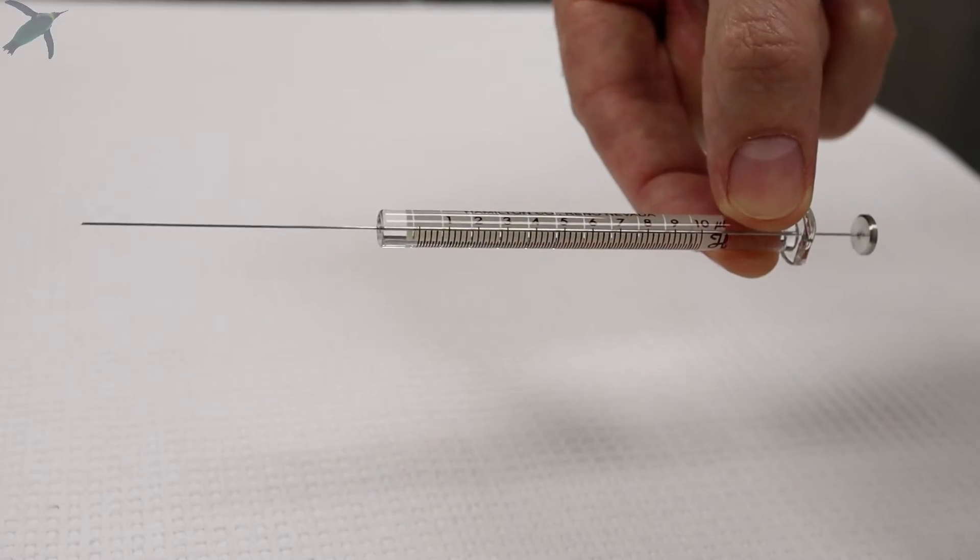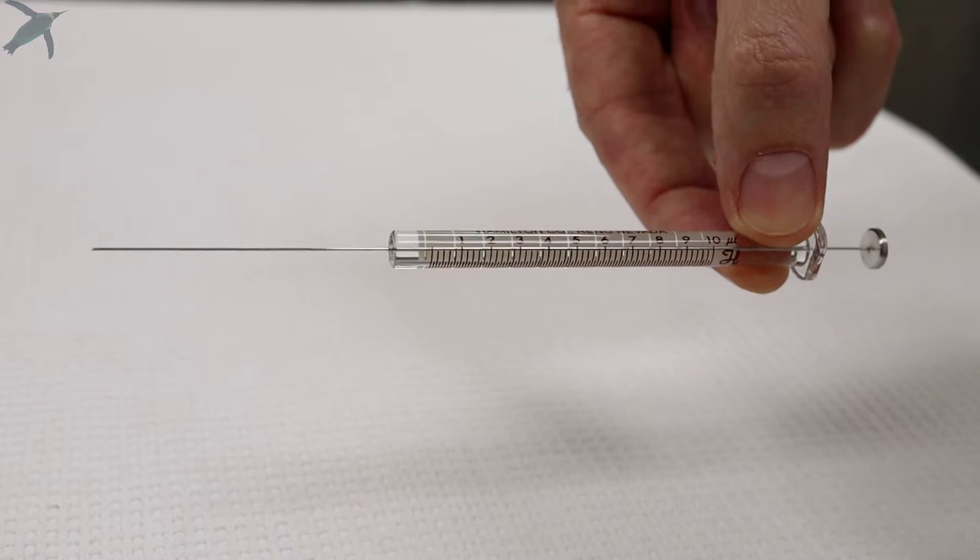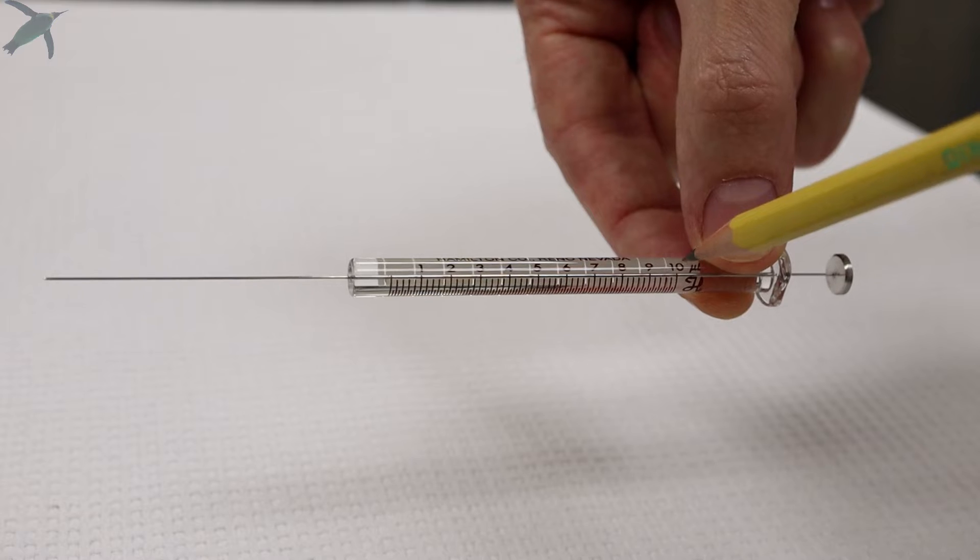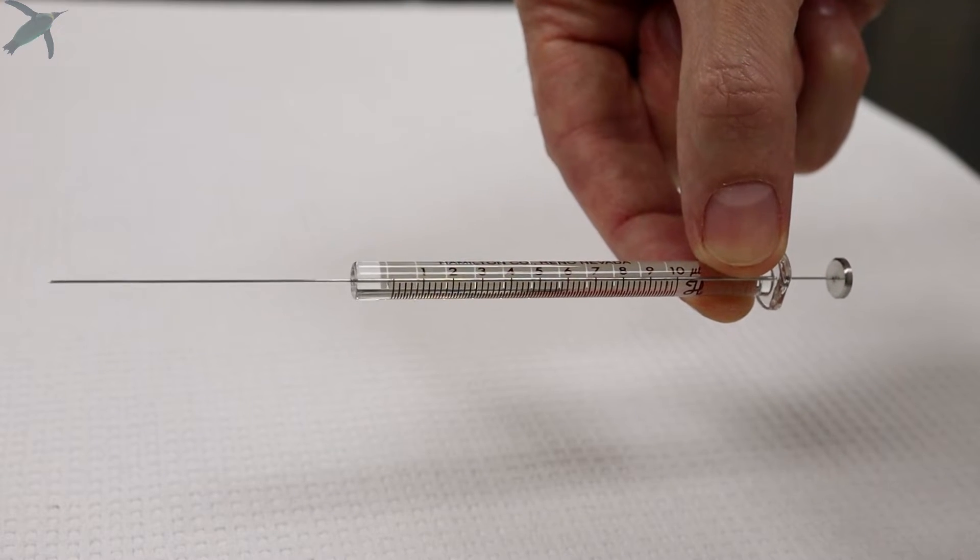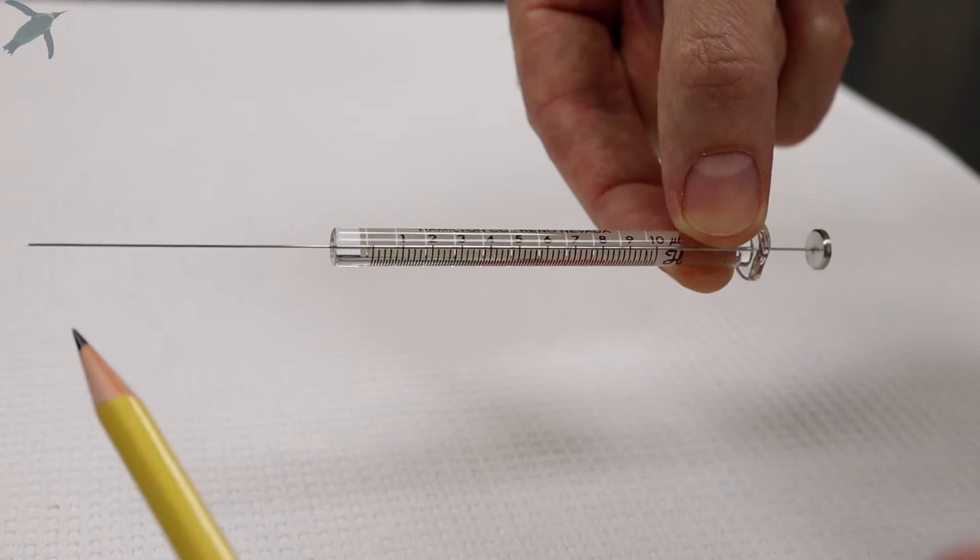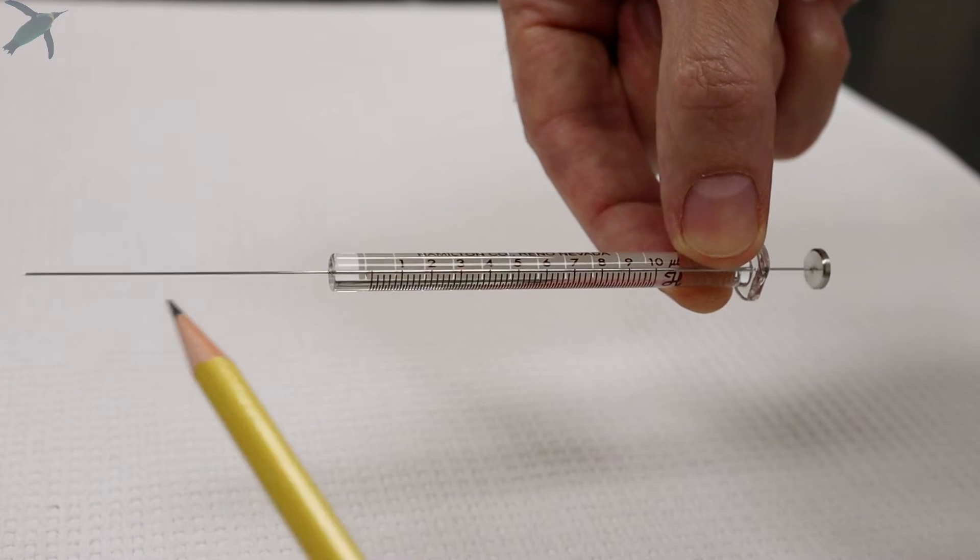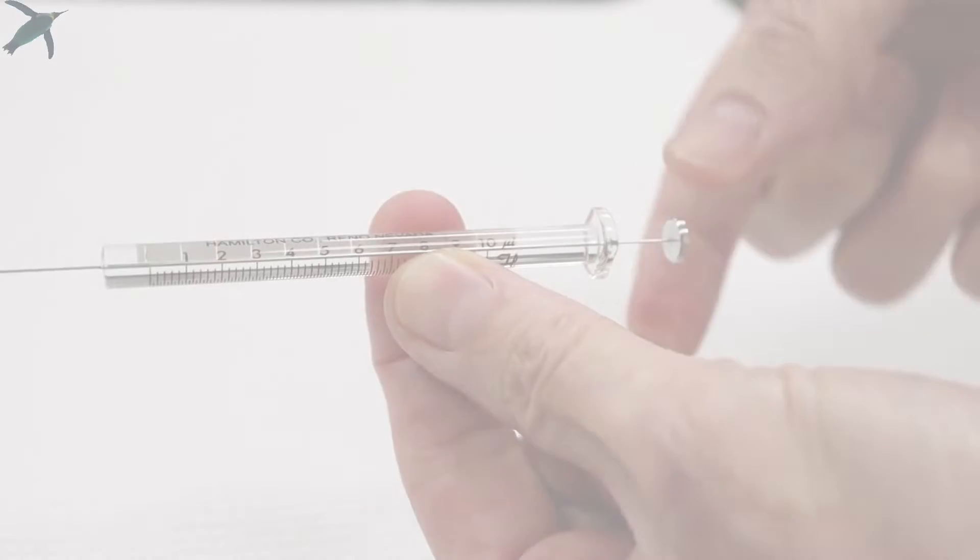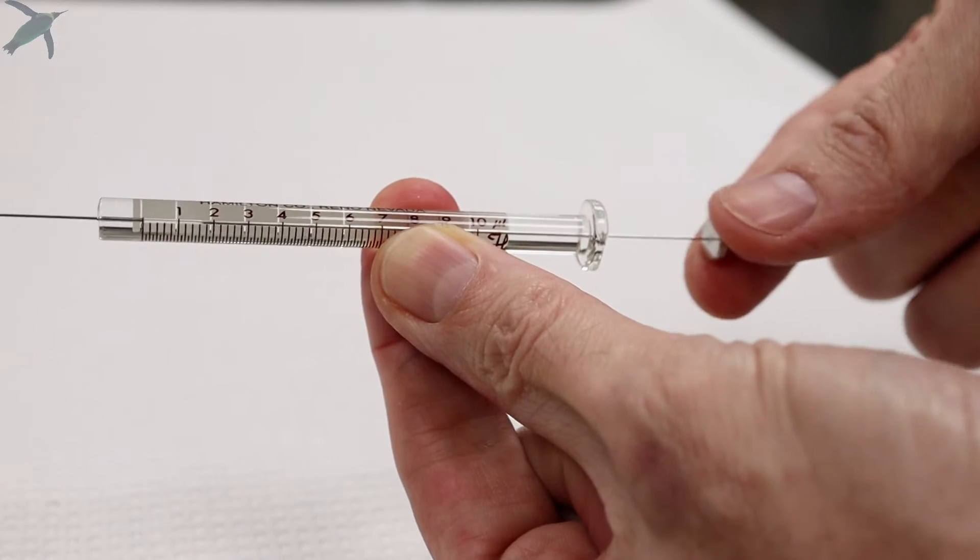To load your sample, you will use a microsyringe and you will inject approximately one microliter of sample. This is a 10 microliter syringe. The syringe is composed of three parts: it has a needle, a barrel which is the glass part, and a plunger which is this stainless steel part.